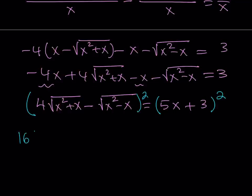This gives us 16 times the quantity x squared plus x minus 8 times, now I'm going to be multiplying these two radicals and their conjugates. So the product is going to be x to the 4th minus x squared under the radical. And notice that I use difference of two squares one more time.